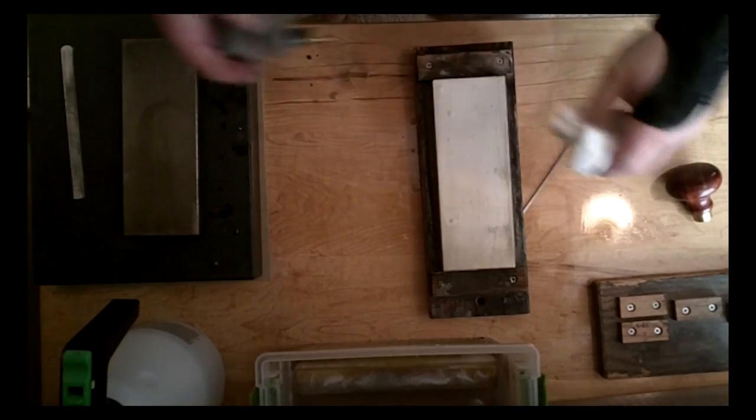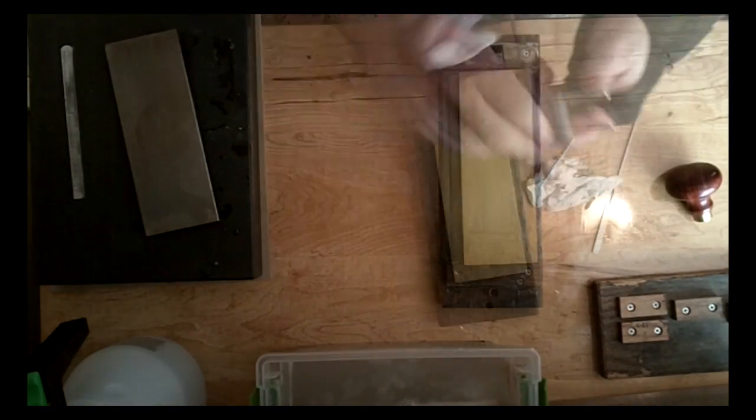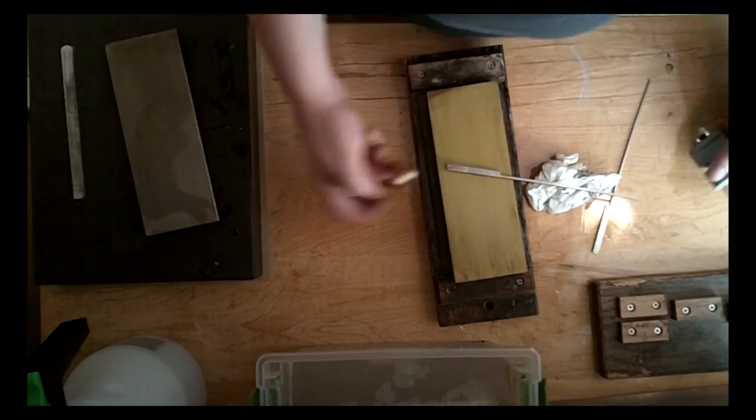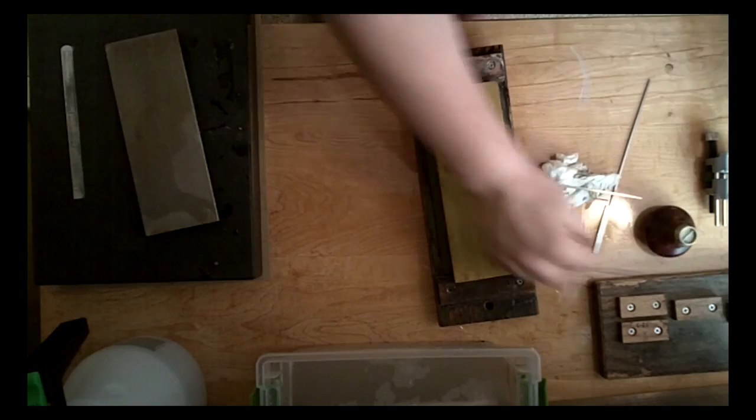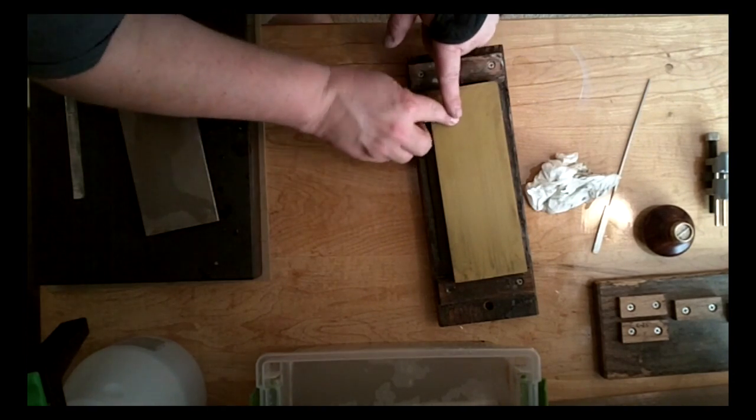Just check it every now and then. You go to 4,000. Work that for a little while. Then you go to 8,000. These are all Norton Waterstones flattening each one ahead of time. You've done that one. Take it out. And then work the back a little bit. And you will pretty much be done. Fairly sharp blade.